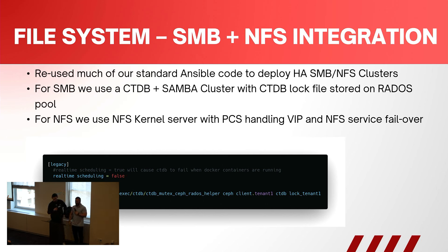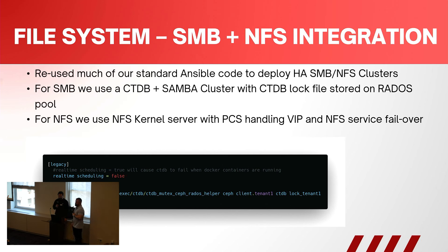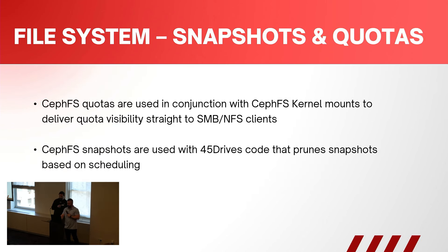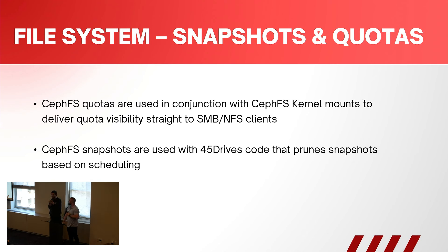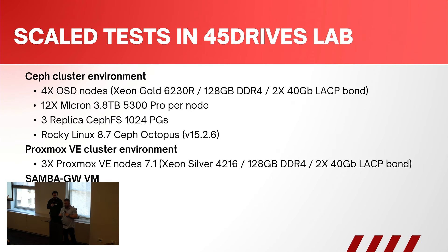For SMB, we use CTDB and Samba to give HA and active-active access into the cluster. For NFS, we use the NFS kernel server on top of CephFS kernel mounts, with PCS handling the VIP and NFS failover. Quotas were handled natively through CephFS. We needed individual kernel mounts for each directory so that clients actually saw the quota we were setting — if you present the parent-level CephFS mount, you can't see individual quotas.